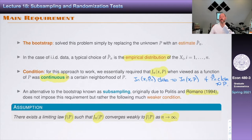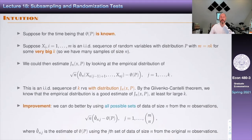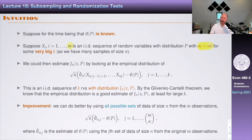Suppose for the time being that theta is known — just to build up the story. Suppose also that instead of a sample of size n, we have a sample of size m = n times k. So we have k samples of size n. If this were the case, we could estimate the sampling distribution of the root by looking at the empirical distribution of the root computed for each of the k samples. By the Glivenko-Cantelli theorem, the empirical distribution gives a good estimate of J_n(x,P) when k is large.